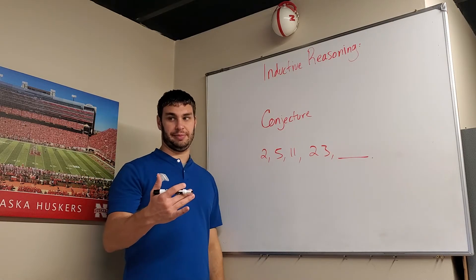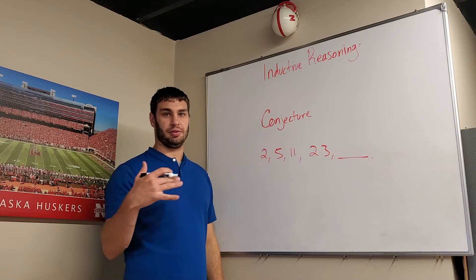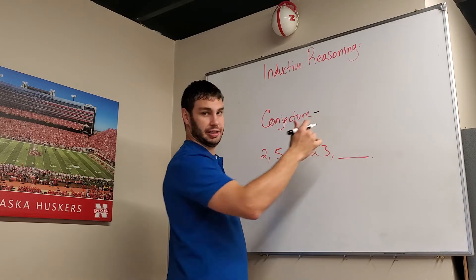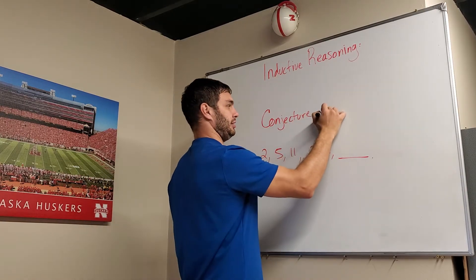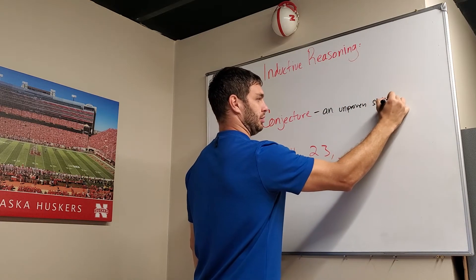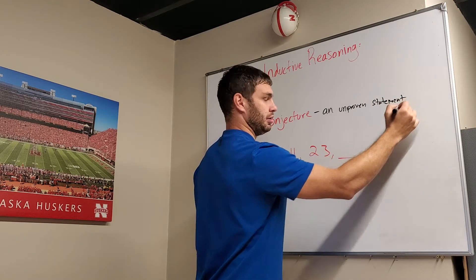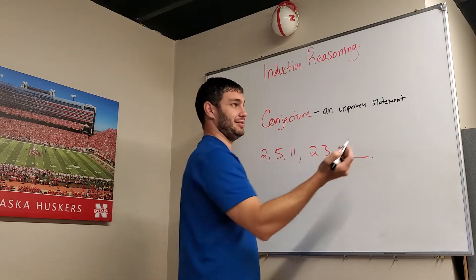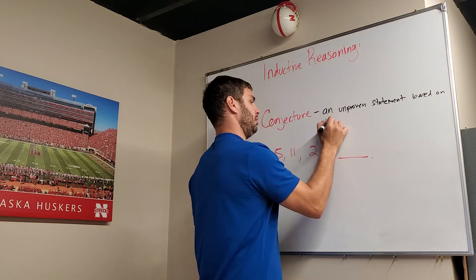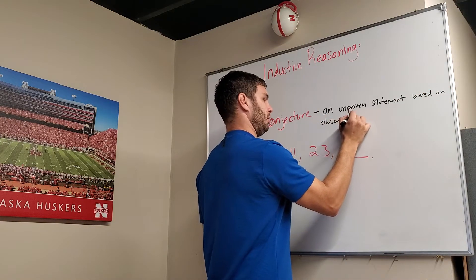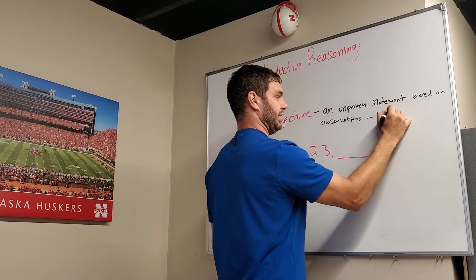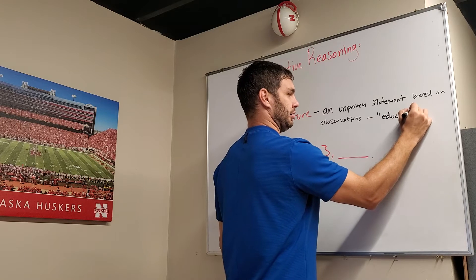Conjecture is an unproven statement that's based on observations, or sometimes called an educated guess. So let me write that down — it's an unproven statement, and that unproven statement is going to be based on observations. Sometimes it's called an educated guess.